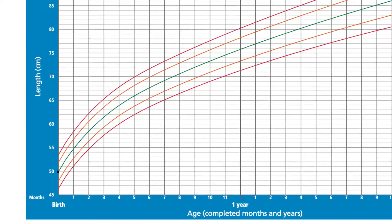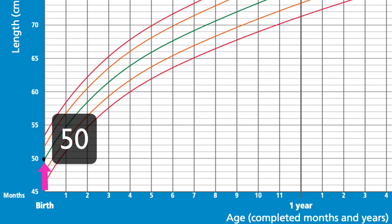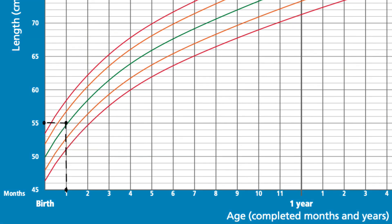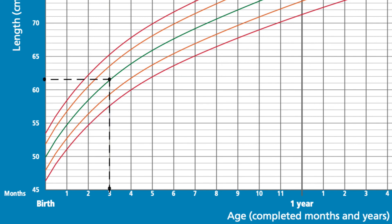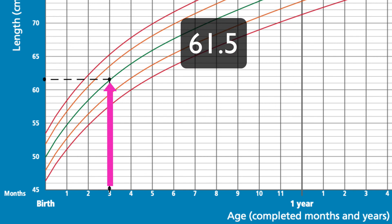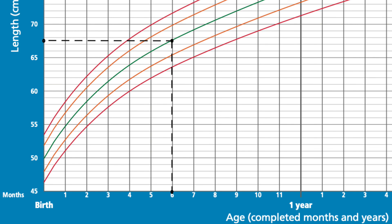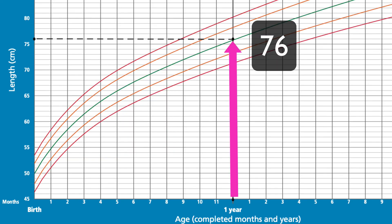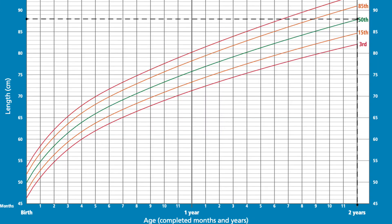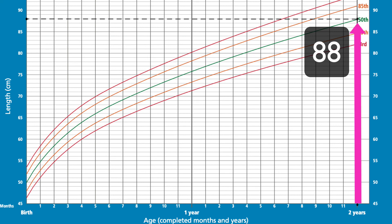For boys: the average birth length is fifty centimeters; at three months it is sixty-one point five centimeters; at one year it is seventy-six centimeters; and at two years the average length of a boy is eighty-eight centimeters.